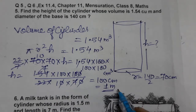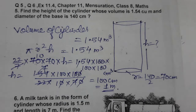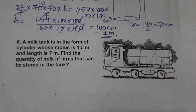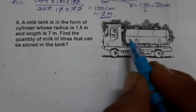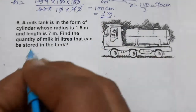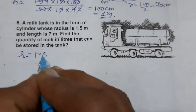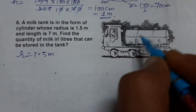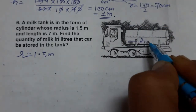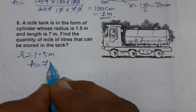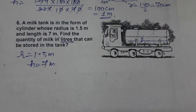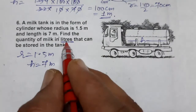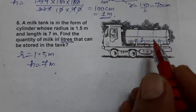This completes question 5. Now we will do question 6: a milk tank is in the form of a cylinder. The radius is given as 1.5 meter and the length (height) is given as 7 meter. We need to find the quantity of milk in liters — that is, how many liters of milk can be stored in this tank.